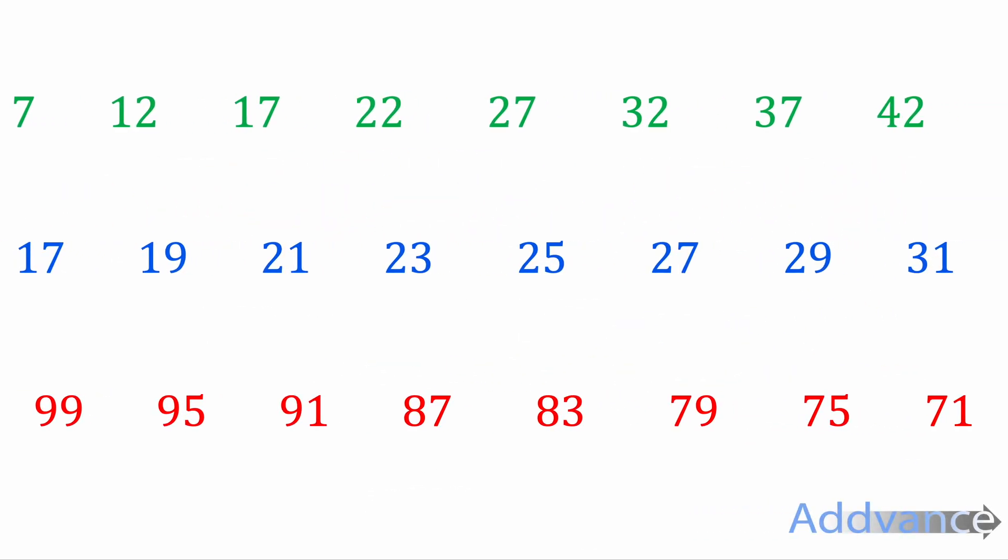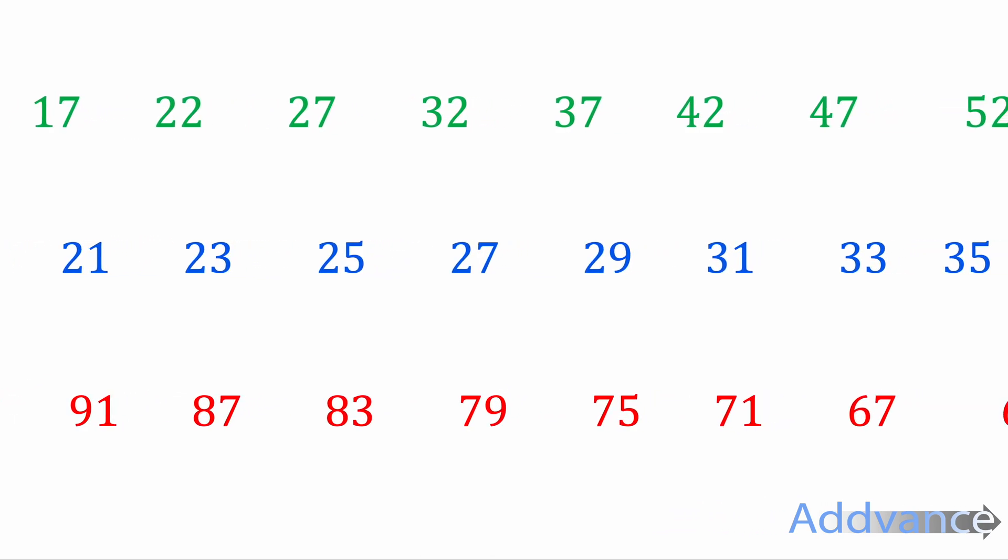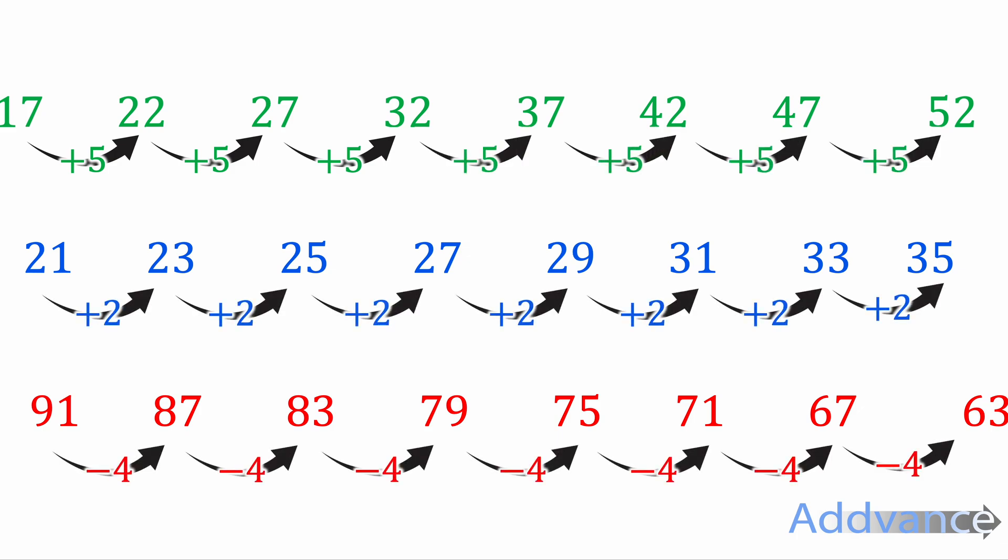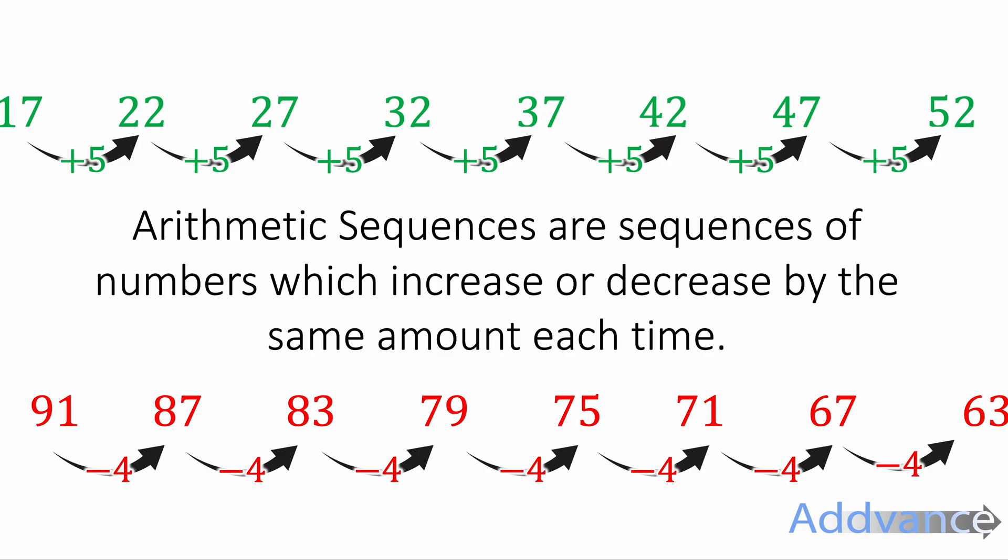Here we have some sequences and you should see that they're going up by the same amount each time. The green sequence is going up by five each time, the blue sequence is going up by two each time, and the red sequence is going down by four each time. These are called arithmetic sequences - sequences of numbers which increase or decrease by the same amount each time.